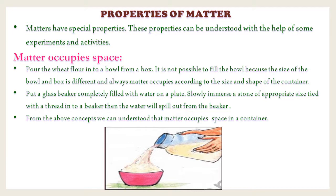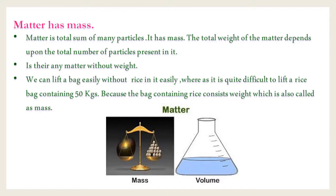The next property is: matter has mass. What do we mean by mass? The weight of the object. Matter is the total sum of many particles and it has mass. The total weight of the matter depends upon the total number of particles present in it. Is there any matter without weight? No. We can lift a bag easily without rice in it, whereas it is quite difficult to lift a rice bag containing 50 kg, because the bag containing rice has weight, which is also called mass. Observe the pictures shown.